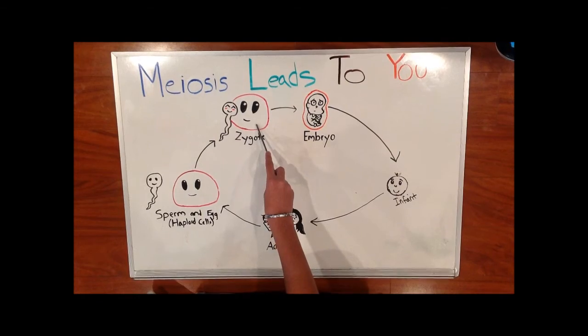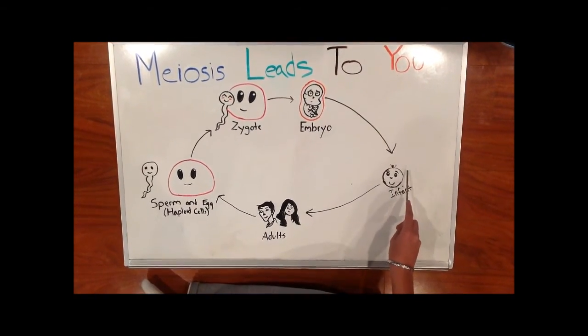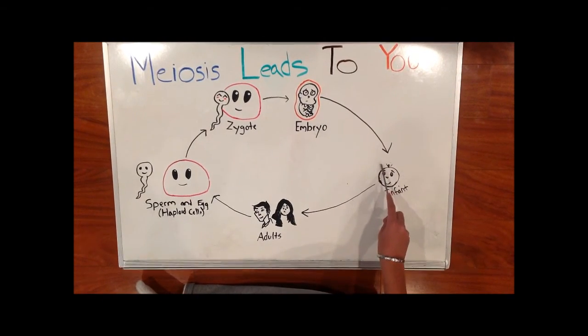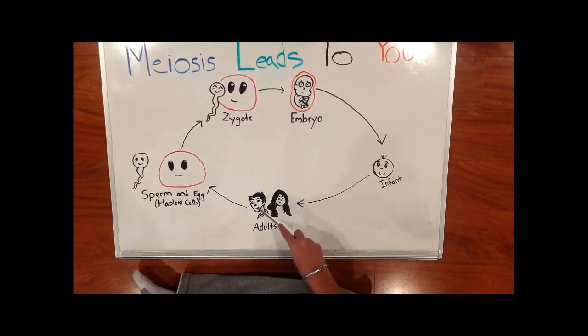The zygote grows with mitosis and forms the embryo. After a period of time when the egg is fertilized, around nine months, the baby is born. After that, mitosis is used to grow and develop the baby's cells.